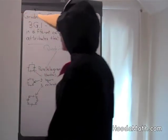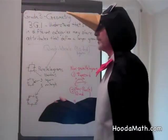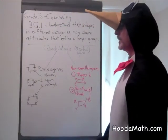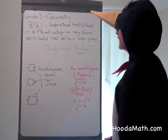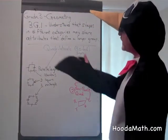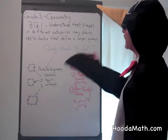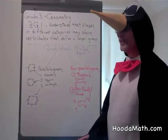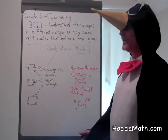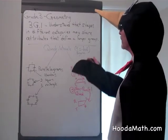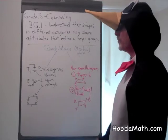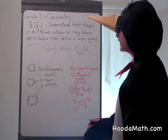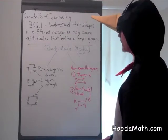Now we're going to talk about categories of geometric shapes. Our main category would be quadrilaterals, and quadrilaterals are any closed figure that has four sides.